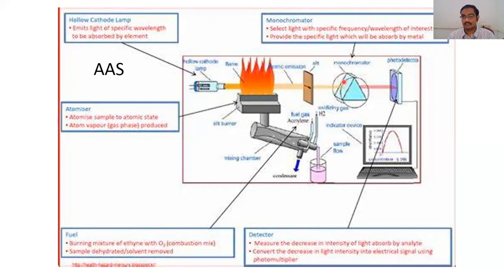focused using a slit, a monochromator, and then finally a detector. So what you see here is the fuel and the sample mixture mechanism, mixing mechanism, and the atomizing mechanism, where the sample is atomized and thrown into the flame.